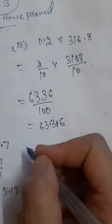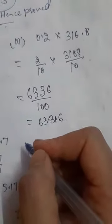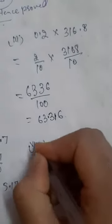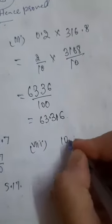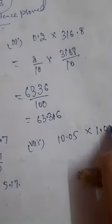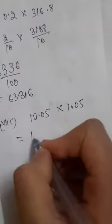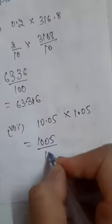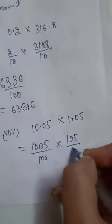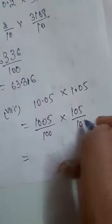In this way you can solve. If you have any doubt you can contact me. I will solve the eighth part, that is 10.05 multiplied by 1.05, which equals 1005 divided by 100 into 105 divided by 100.